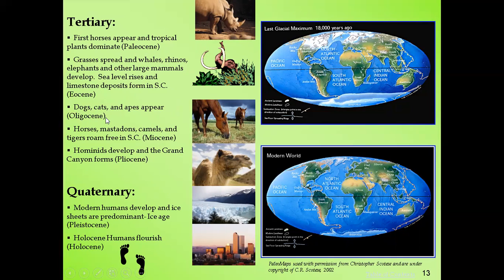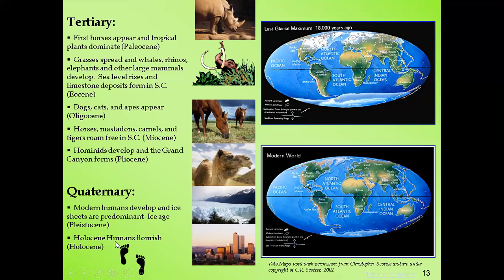In the Miocene epoch, horses, mastodons, camels, and tigers roamed the continents. In the Pliocene epoch, hominids developed and the Grand Canyon formed. The continents had by now separated — the North and South Atlantic Ocean, Central Indian Ocean, and Pacific Ocean existed. In the Quaternary's Pleistocene epoch, modern humans developed and ice sheets were predominant. In the Holocene, humans flourished.